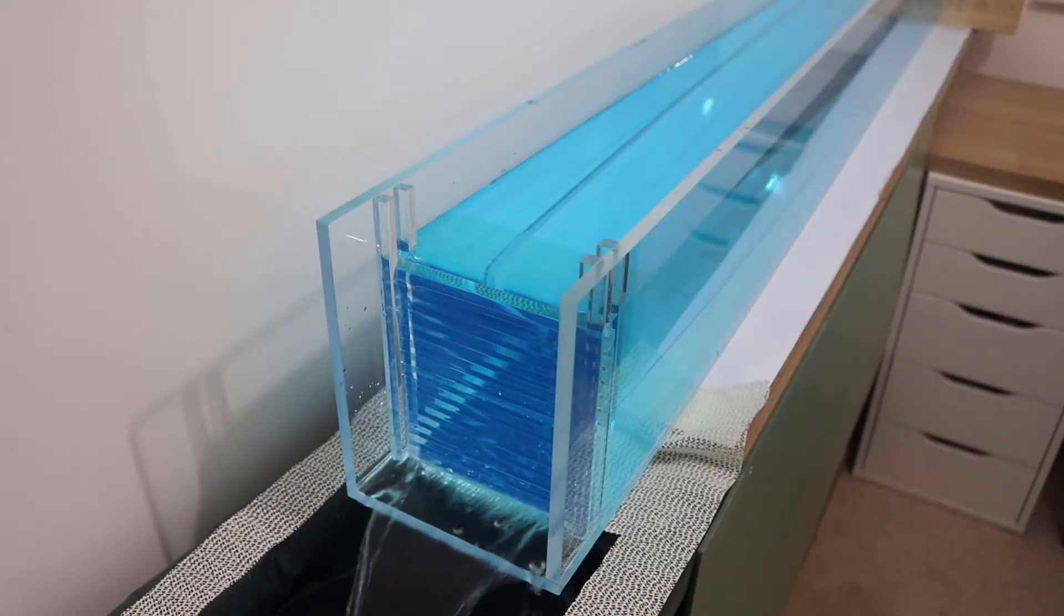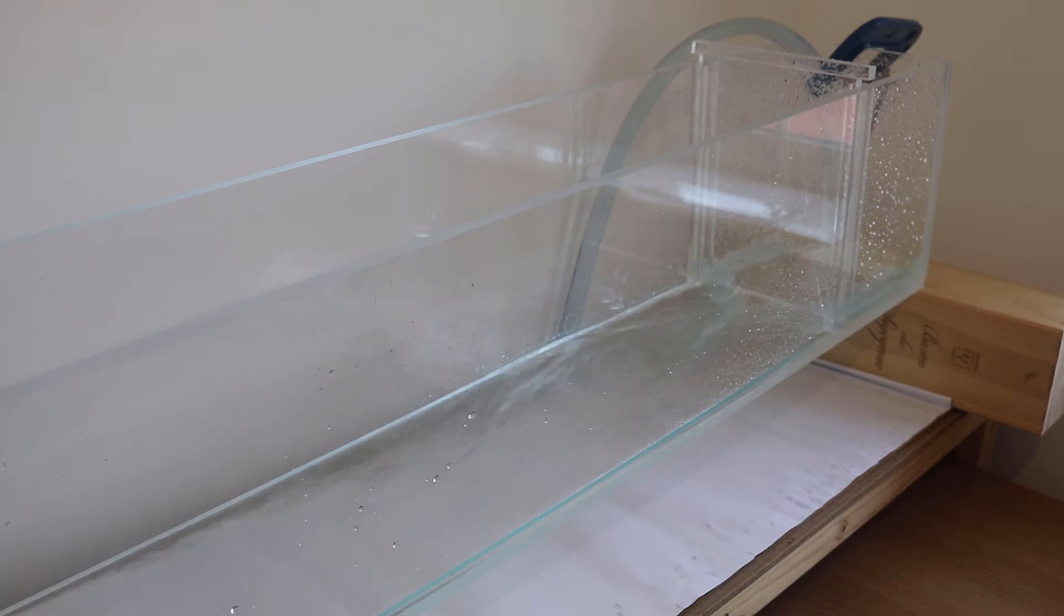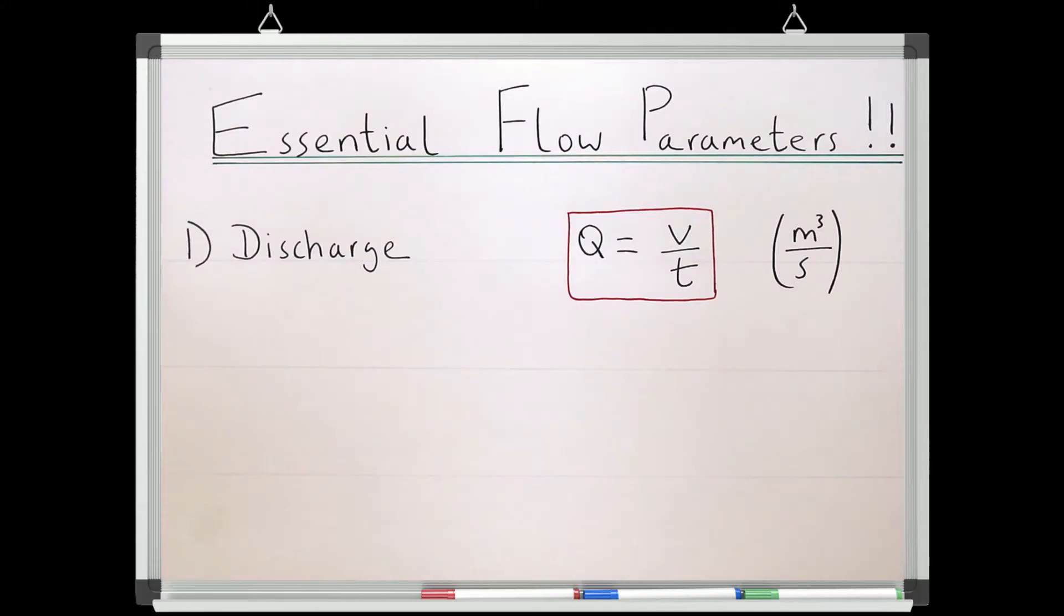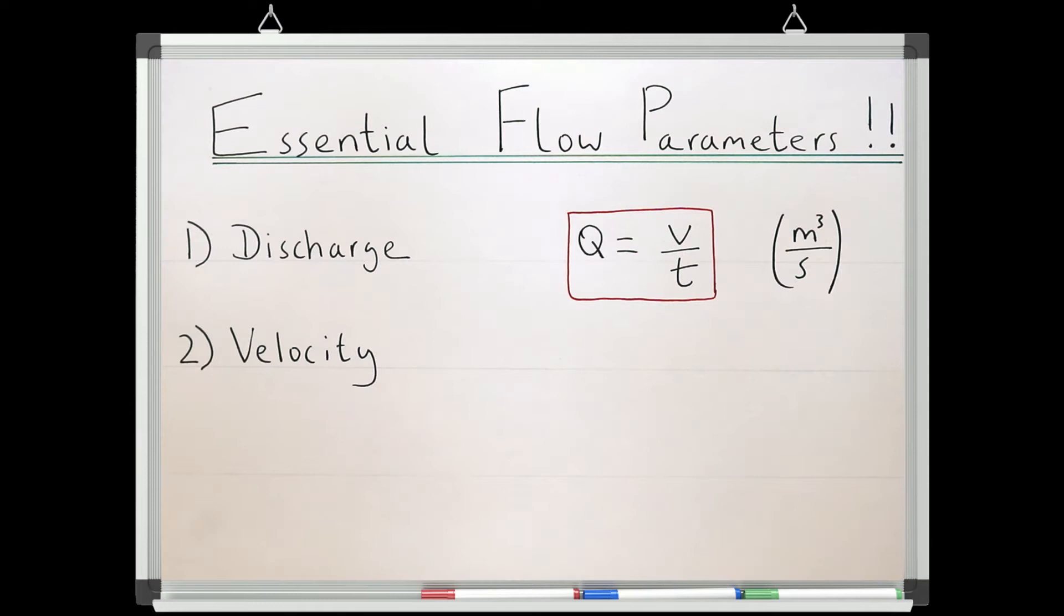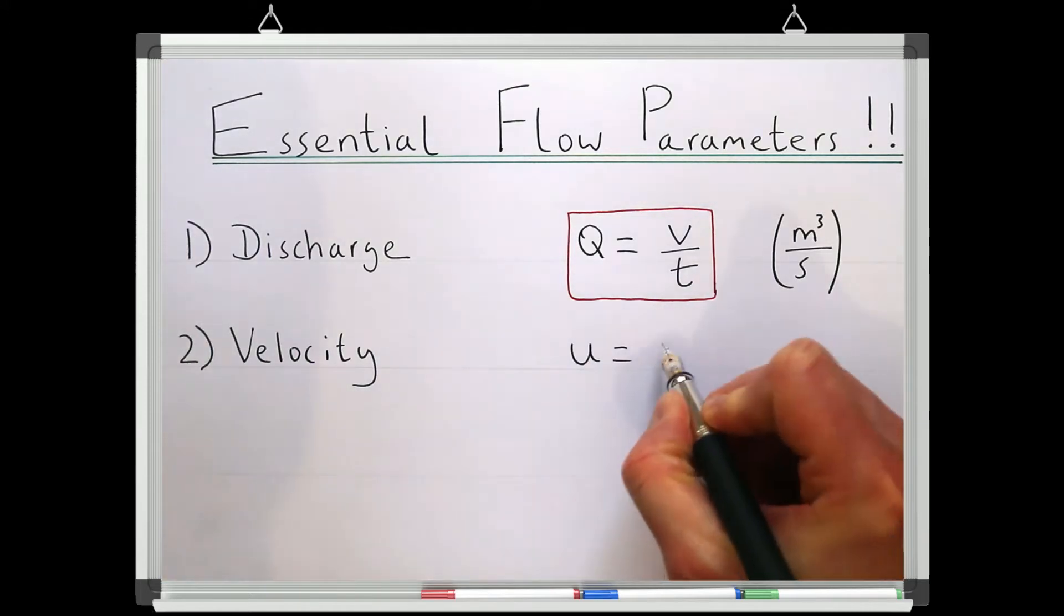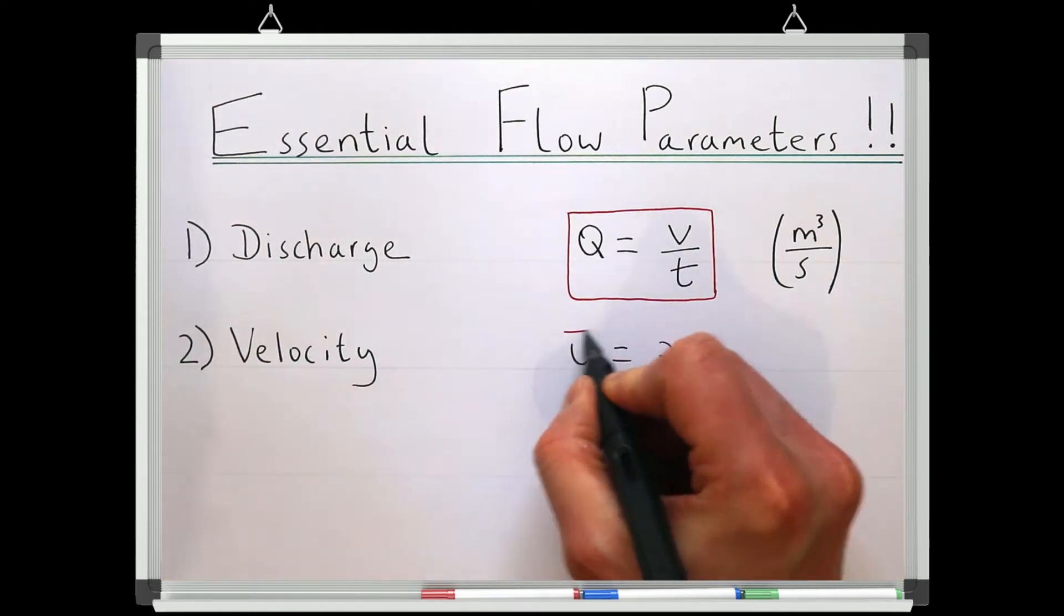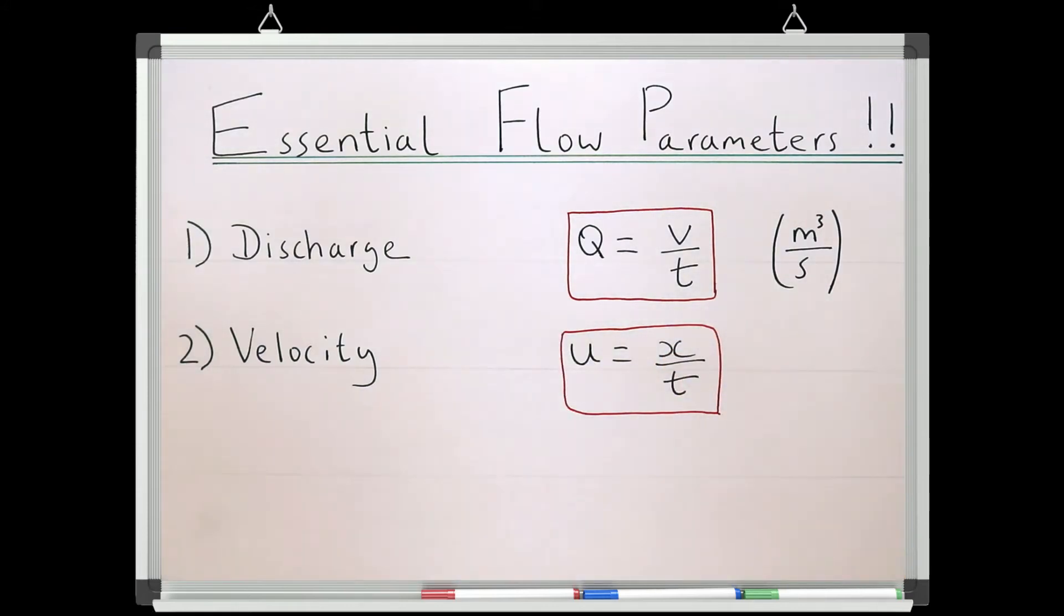Just pause for a second to consider what are the two parameters we could use to differentiate between these cases. The second parameter is the flow's primary velocity. This is how fast the water in the system is moving in the x direction, and is defined as the distance the water has travelled over the time it took to travel that distance.